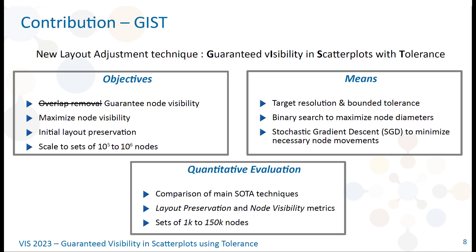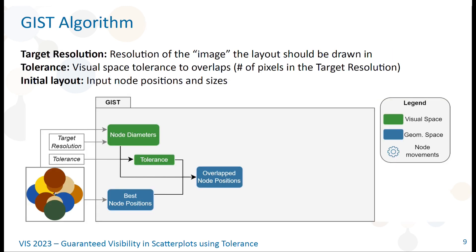And a stochastic gradient descent to minimize the necessary node movements to remove overlaps in the geometric space. Later, we will also present the comparison of GIST with state-of-the-art algorithms on layout preservation and node visibility metrics. But first, let's see how GIST works exactly.